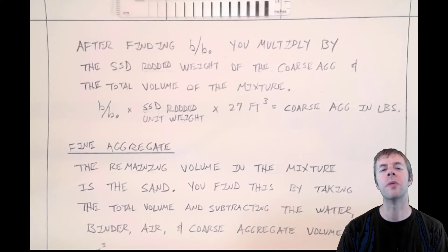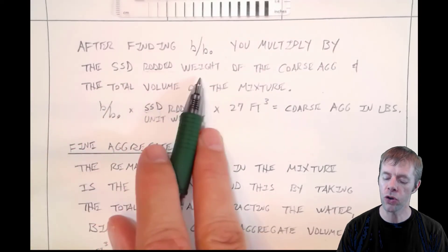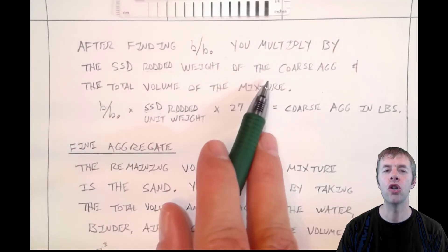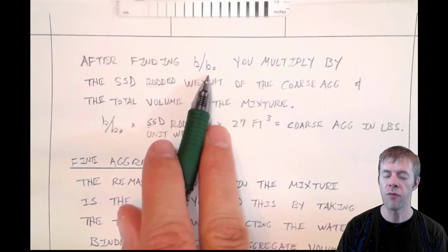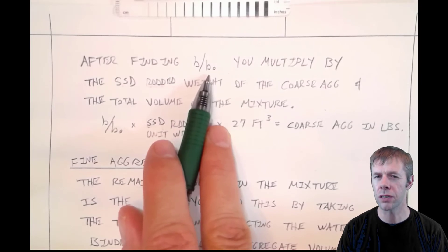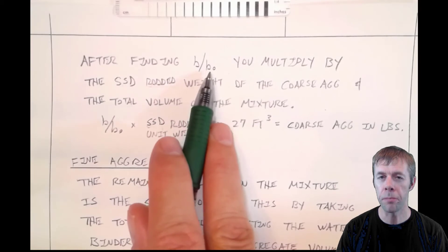You get this mythical B over B naught and you're going to multiply that by the SSD rodded weight of the coarse aggregate. So let's get this straight. This is the ideal—they've worked it out for all kinds of different scenarios. And then you multiply this by your B naught.